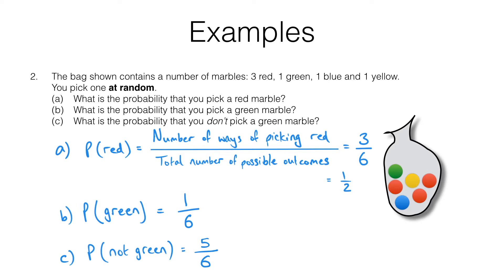I want to highlight some key words. Remember, events and outcomes are not the same thing. If we look at part A — the probability of the event 'red' occurring — the event is that you pick out a marble and it turns out to be red. But that event was made up of three possible outcomes: you could have picked this red, this red, or this red. Three different outcomes made up that one event.